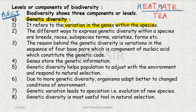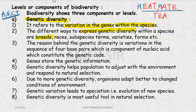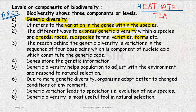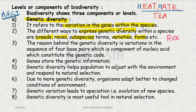When I express genetic diversity in a different way, there are breeds, races, subspecies, varieties, and forms. If you talk about different types of forms and varieties, in India there are more varieties. We have rice and mango as the most important examples.